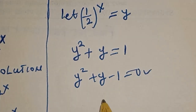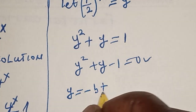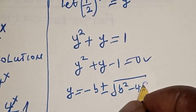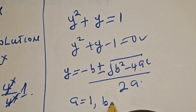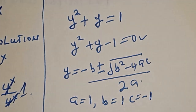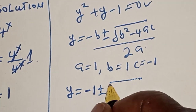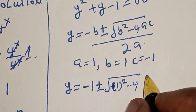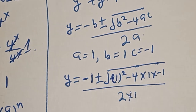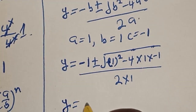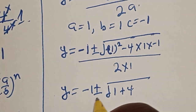This is a quadratic equation which can be solved using the quadratic formula: y equals negative b plus or minus the square root of b squared minus 4ac, all over 2a. From our equation, a equals 1, b equals 1, and c equals negative 1. Substituting: y equals negative 1 plus or minus the square root of 1 squared minus 4 times 1 times negative 1, divided by 2 times 1, which gives y equals negative 1 plus or minus the square root of 1 plus 4, over 2.